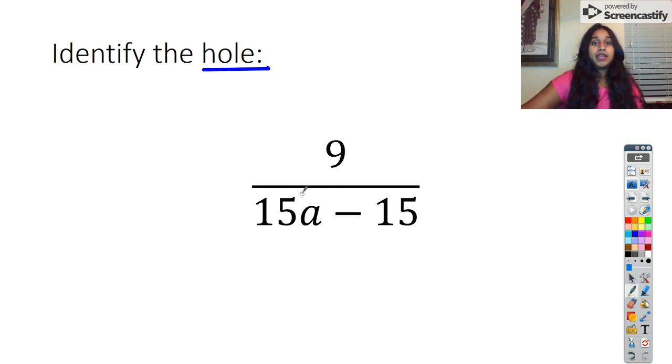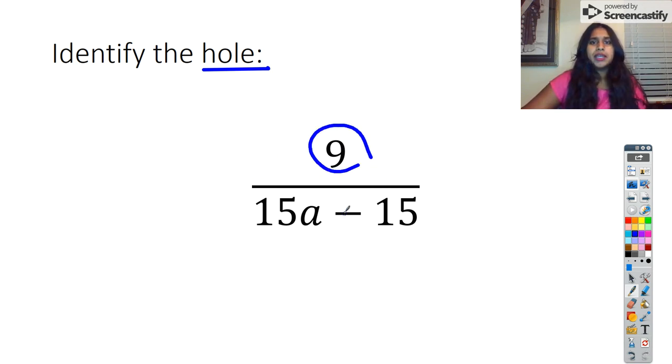This one is asking us to identify the hole. To have a hole, I have to factor this out and see if anything cancels. But just looking at this equation, there's only a 9 on top — I can't cancel, so there is no hole.